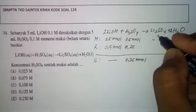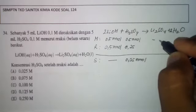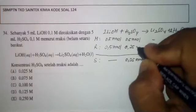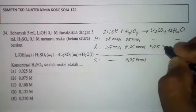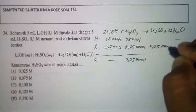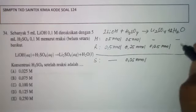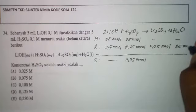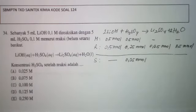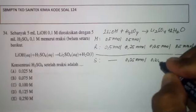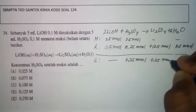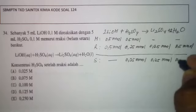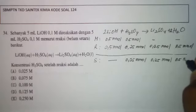Sehingga H2SO4 yang tersisa adalah 0,25 milimol. Garam Li2SO4 yang terbentuk 0,25 milimol. H2O yang terbentuk, koefisiennya 2, jadi 0,5 milimol. Sehingga setelah reaksi, H2SO4 yang tersisa adalah 0,25 milimol dan Li2SO4 serta H2O masing-masing 0,25 dan 0,5 milimol.